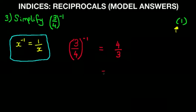So 3 quarters to the power of minus 1 equals 4 thirds. And as it said simplify, the correct answer is 1 and a third — so 4 thirds is 1 and a third. And that is our answer. Now if there are 2 marks for this question, simplifying it from 4 thirds to 1 and 1 third will get you the extra mark.